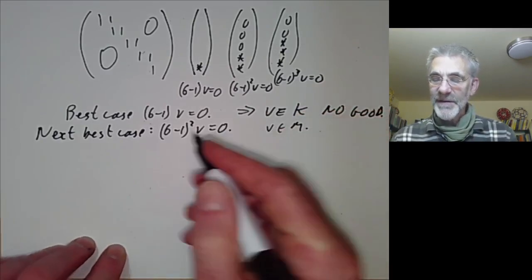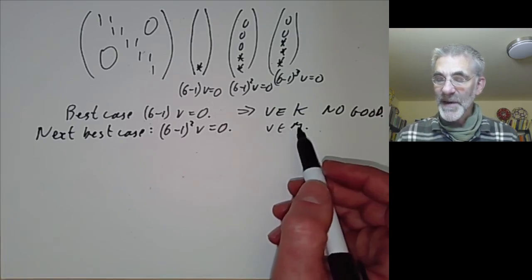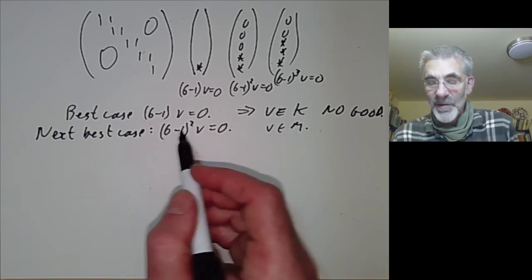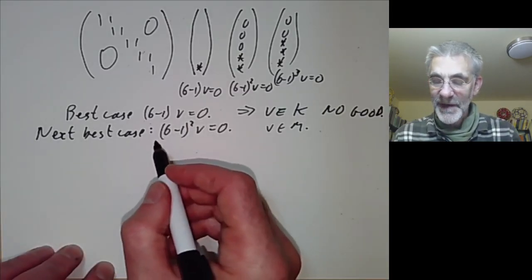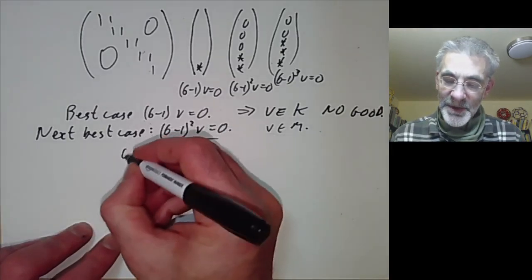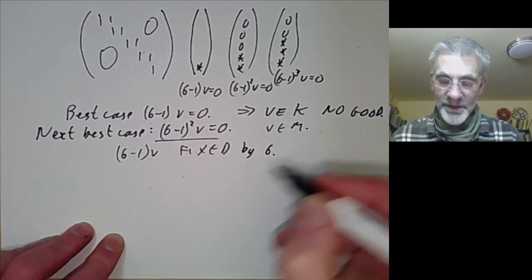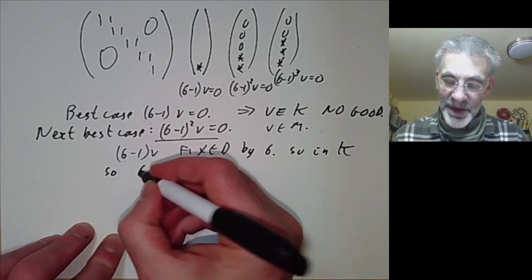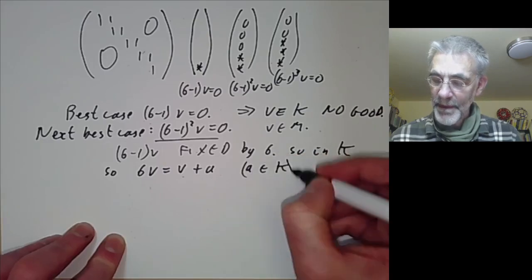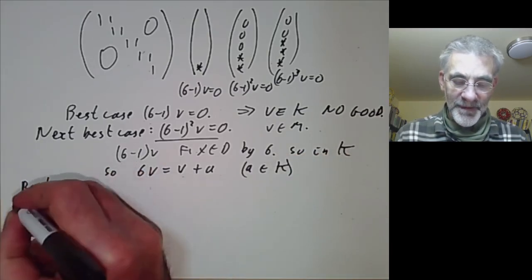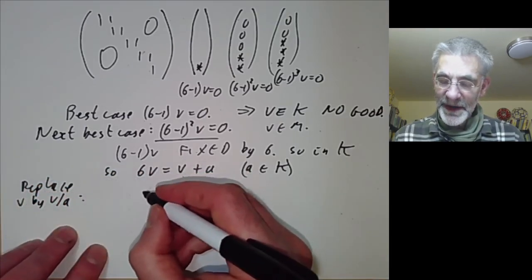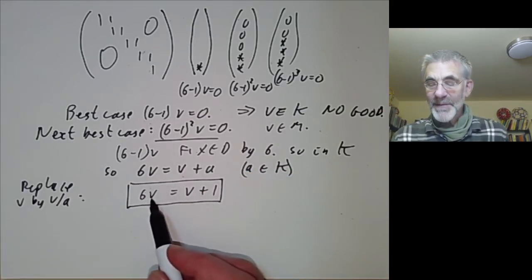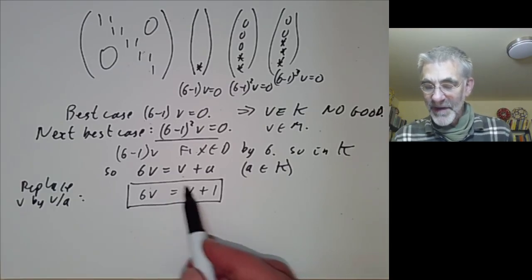The next best case is (sigma - 1)^2 V = 0. We can certainly find a vector with this property because the vector space is spanned by generalized eigenvectors, and we can keep applying (sigma - 1) until we reach this condition. What does this say? It says (sigma - 1)V is fixed by sigma, so it's in K. This means σV = V + A for some A in K. Now we can replace V by V/A and find a vector with σV = V + 1. So this is what the extension M is generated by — we can find a vector V in M satisfying σV = V + 1.